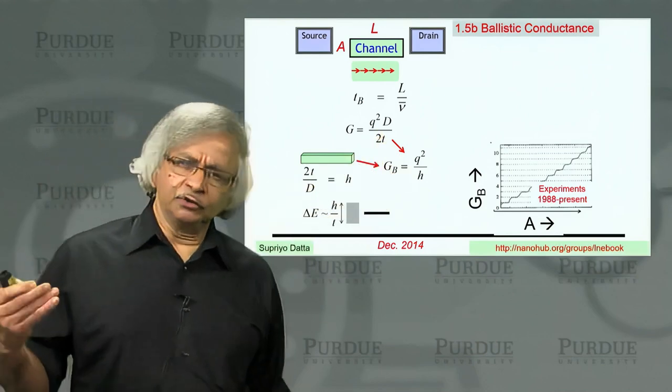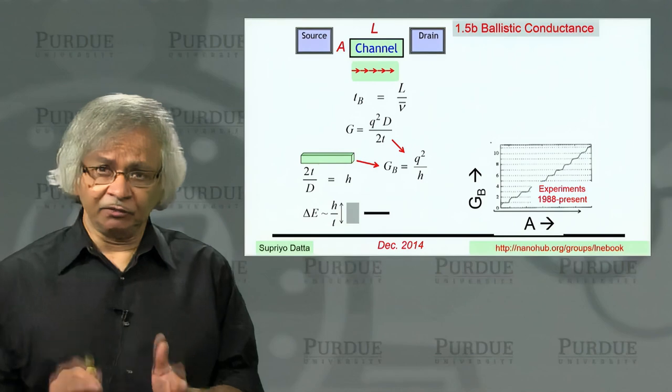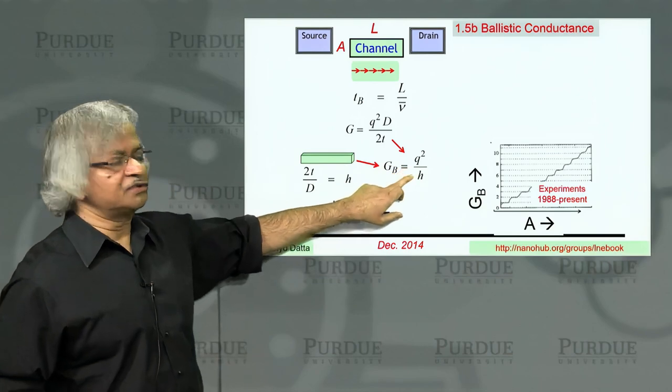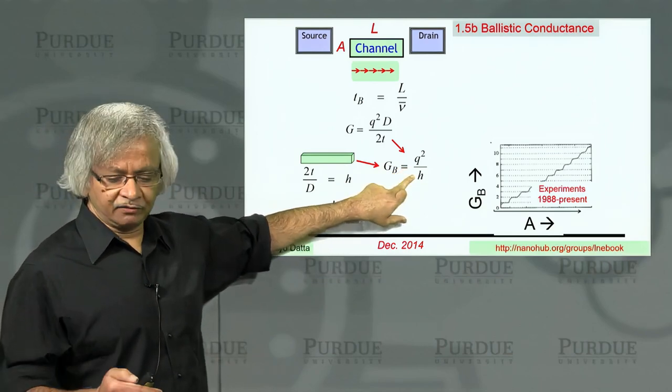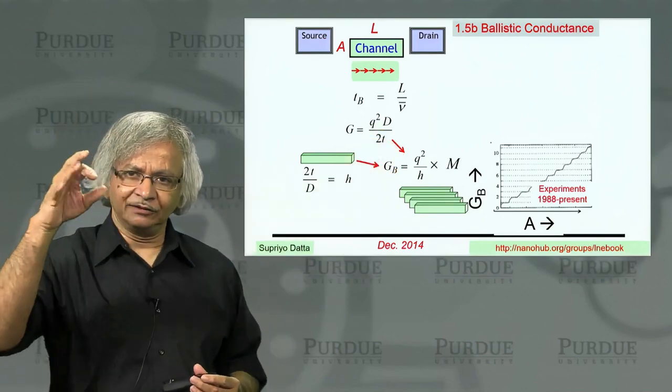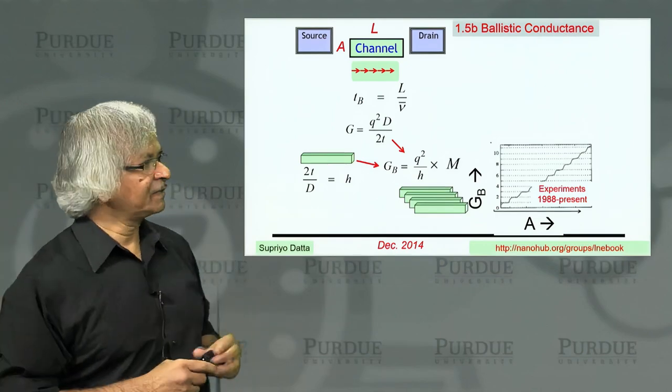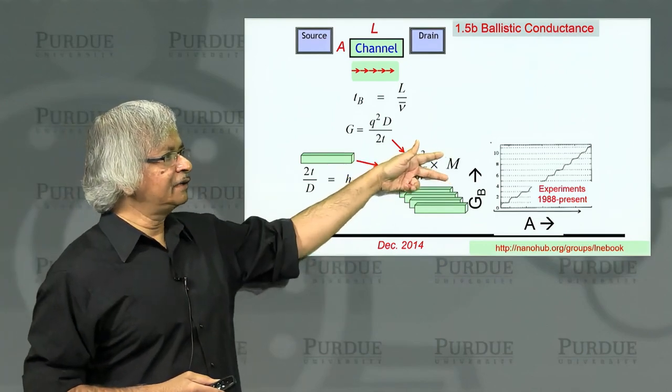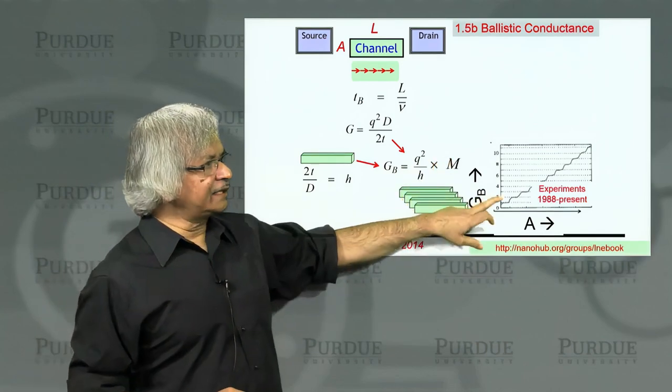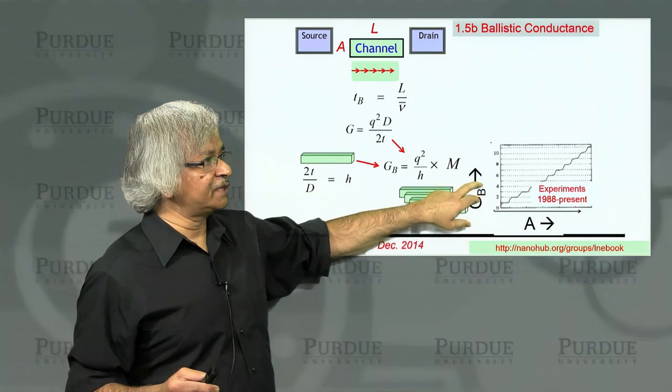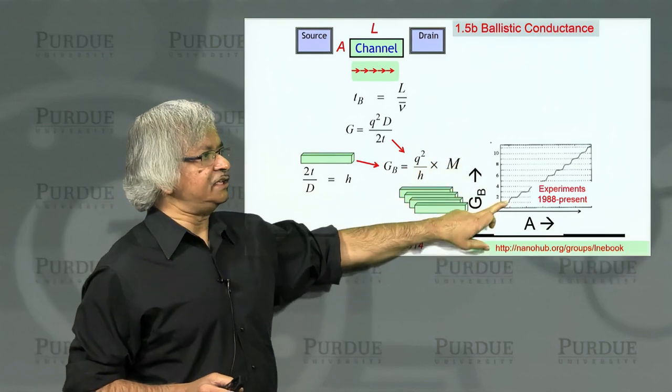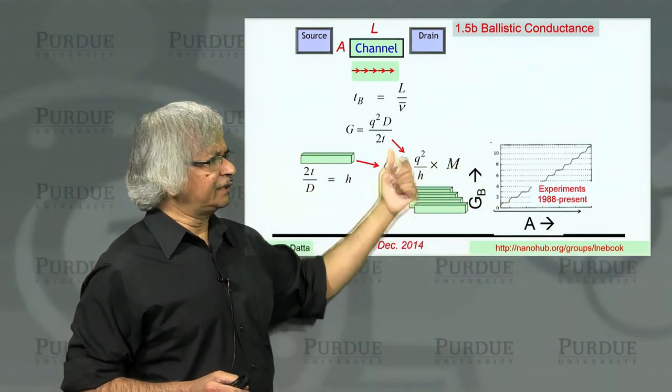And this is something we'll go into in more detail in the second unit. But from this point of view, a one-dimensional conductor gives you a ballistic conductance of q squared over h. And the real conductor, you could view as lots of 1D conductors in parallel, which you could call the conducting channels. So if you have m of them, the conductance would be q squared over h times m. And that's exactly what this experiment shows. It shows a ballistic conductance, which is this quantum of conductance times an integer.